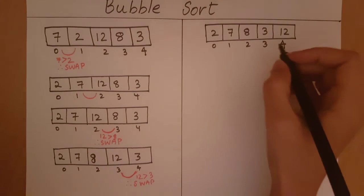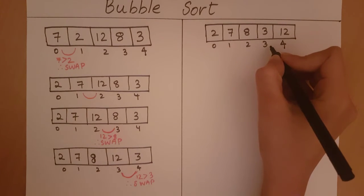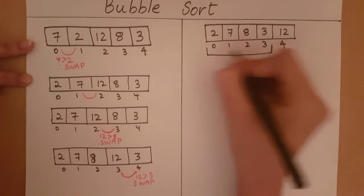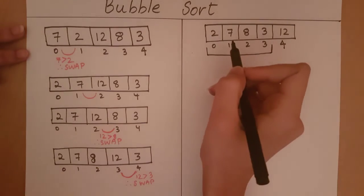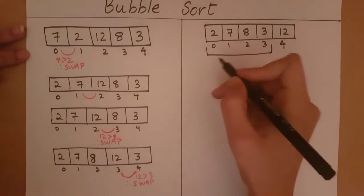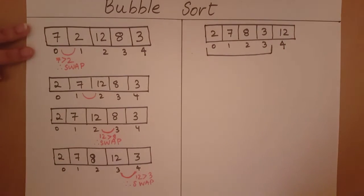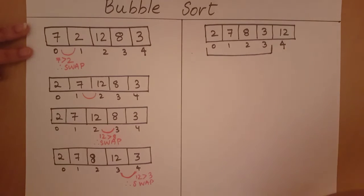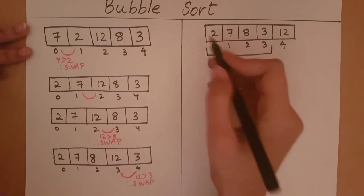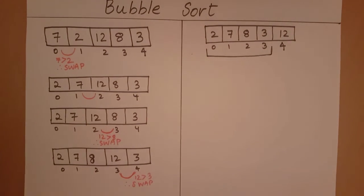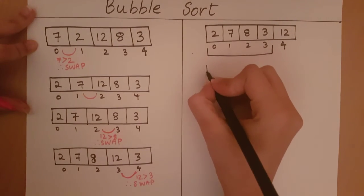Now let's look at the next index, which is index 3. Within the range from 0 to 3, we will push the largest element to the last index within this range. We are going to do the same set of steps: compare 2 and 7 — they are in the correct order; compare 7 and 8 — they are in the correct order; compare 8 and 3 — they are not in the correct order, so we will swap. That's how we get 8 to the last index of this range. The second largest element is pushed to the second last index in the array. Once we do that, we will get an array which looks like this.